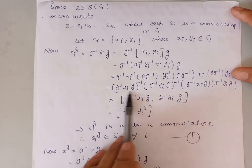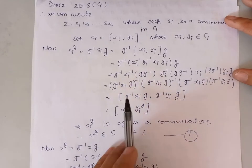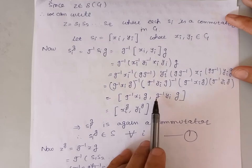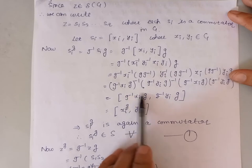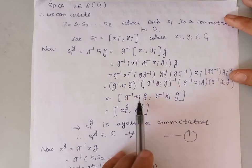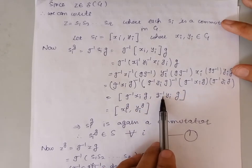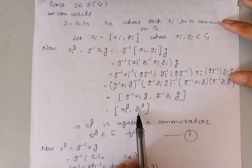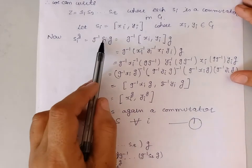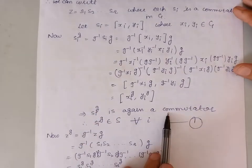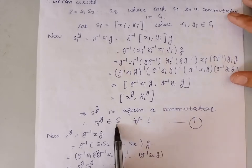According to the definition of commutator, this expression is the commutator of the elements G⁻¹XiG and G⁻¹YiG. According to our notations, G⁻¹XiG is the conjugate of Xi, denoted Xi^G, and G⁻¹YiG is the conjugate of Yi, denoted Yi^G. So we can say that G⁻¹SiG is again a commutator, and therefore it belongs to ΔG.